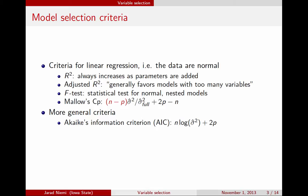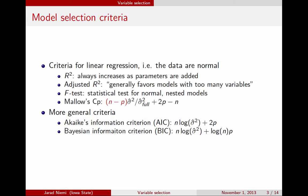AIC can also be used in other models — later in the semester we'll talk about Poisson and logistic regression, and AIC can be used for those as well. There's also a different information criterion called BIC, or Bayesian Information Criterion, where the penalty term changes from 2 to log(n). This term penalizes the number of parameters in your model, where p is the number of coefficients. And finally, there's the idea of cross-validation.